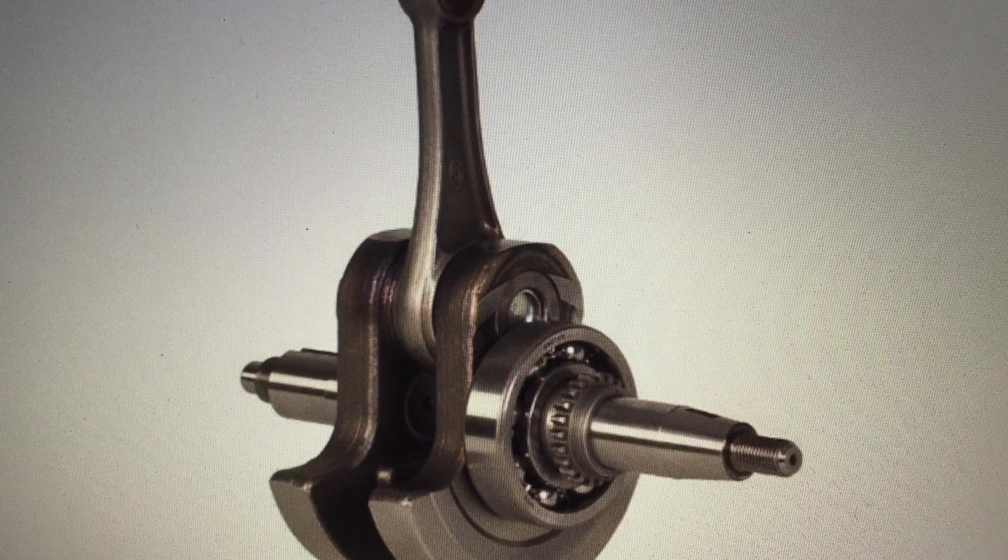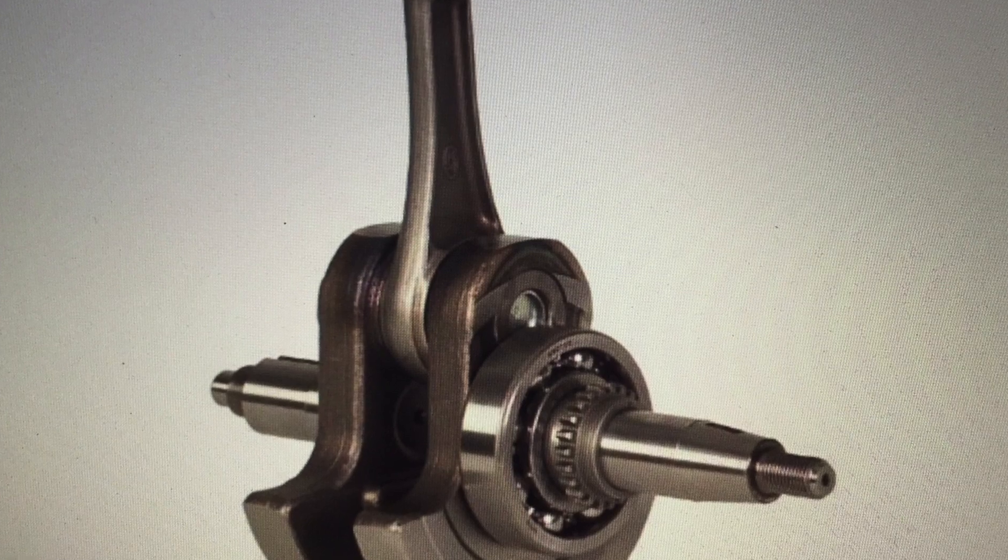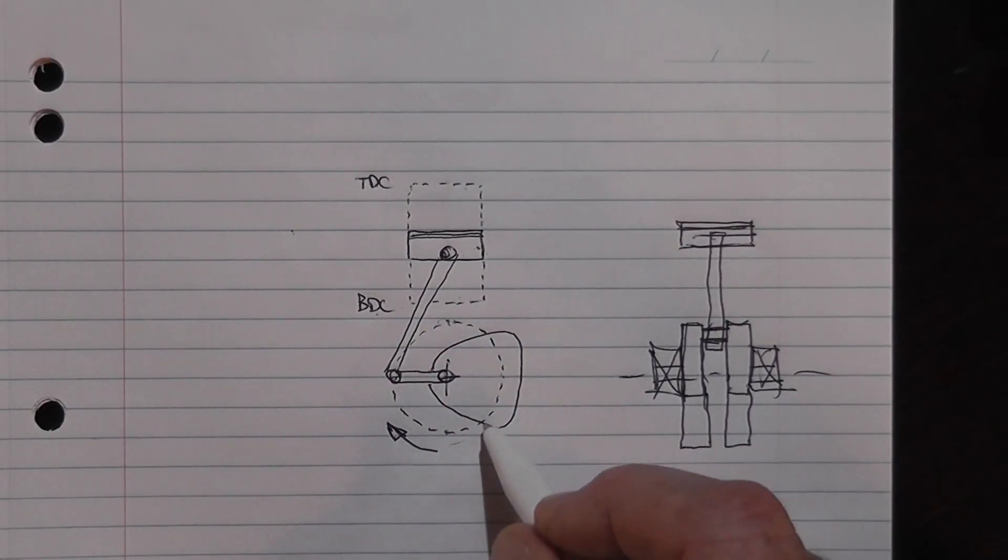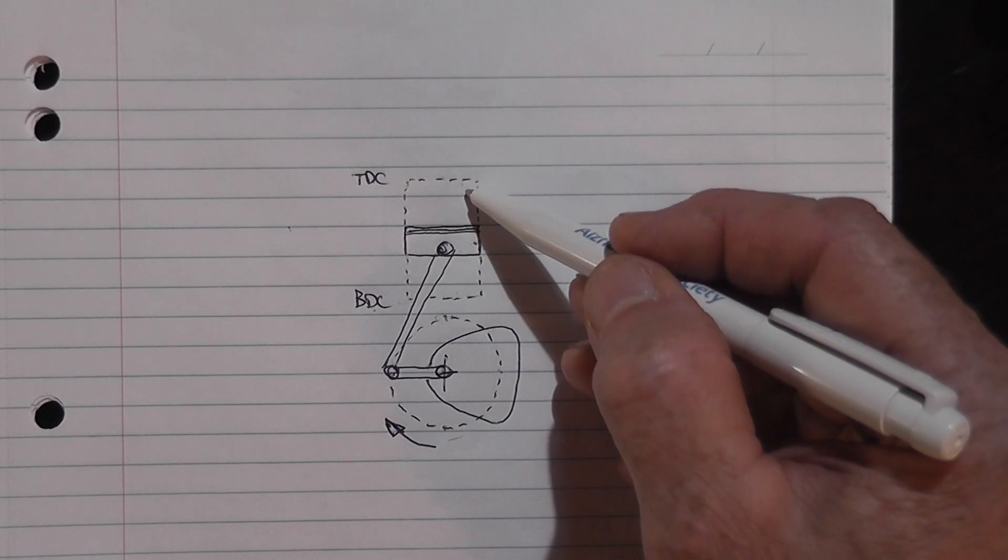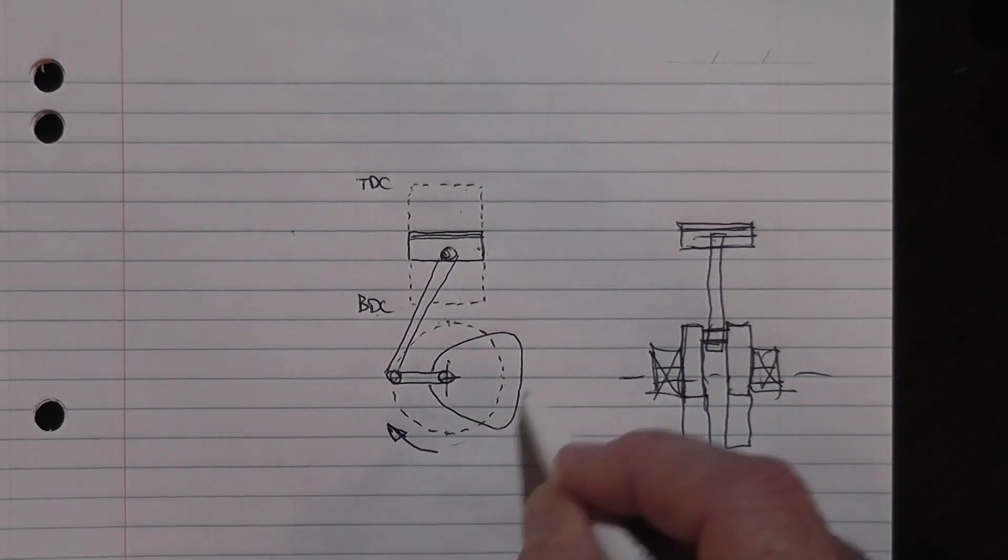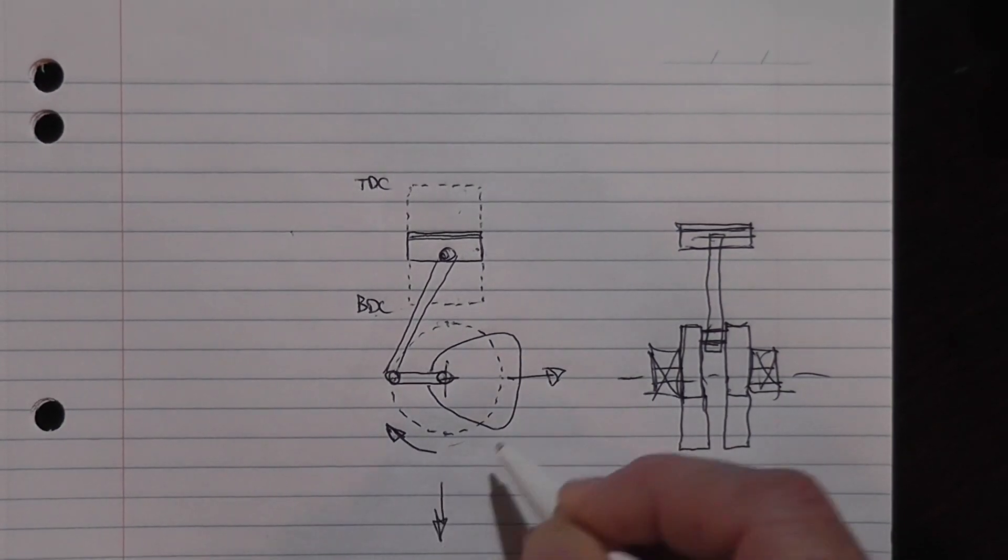So that weight hanging off the crankshaft is turning with the crankshaft and it counteracts the force of this piston coming up here and stopping. When that's at the top, that would be at the bottom and it creates a force in this direction and it would be at the bottom going like that.